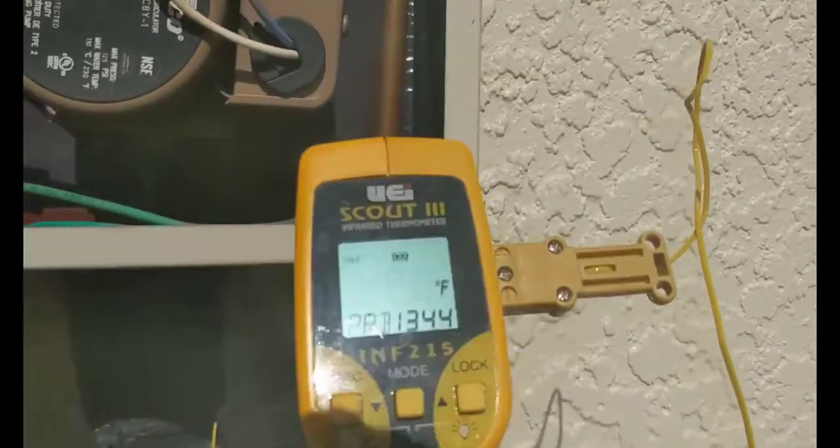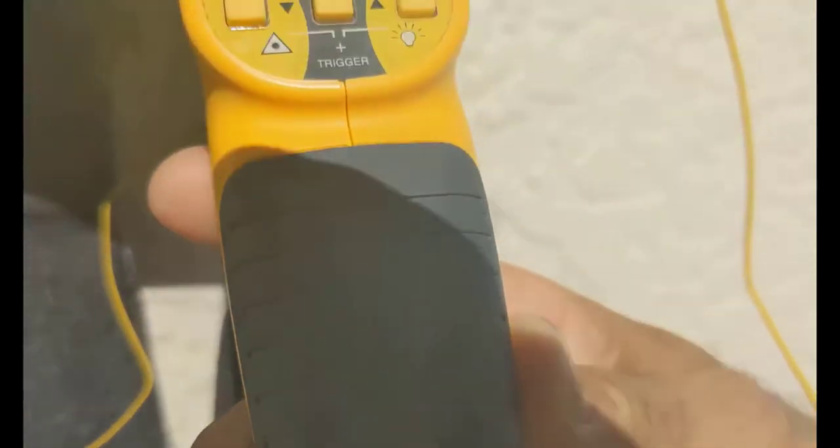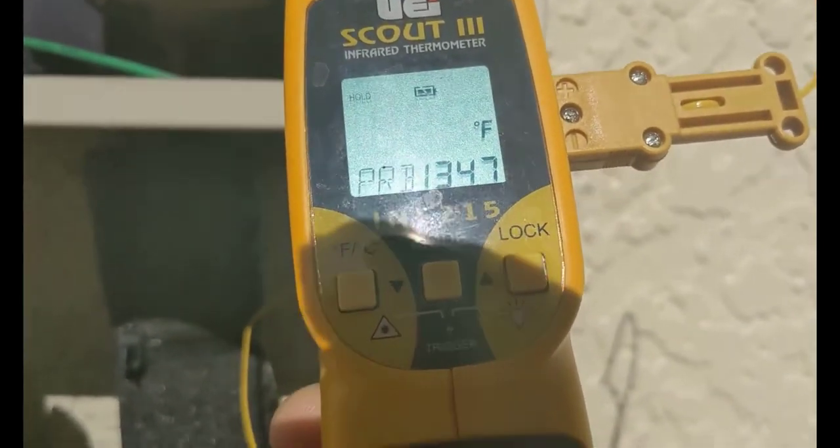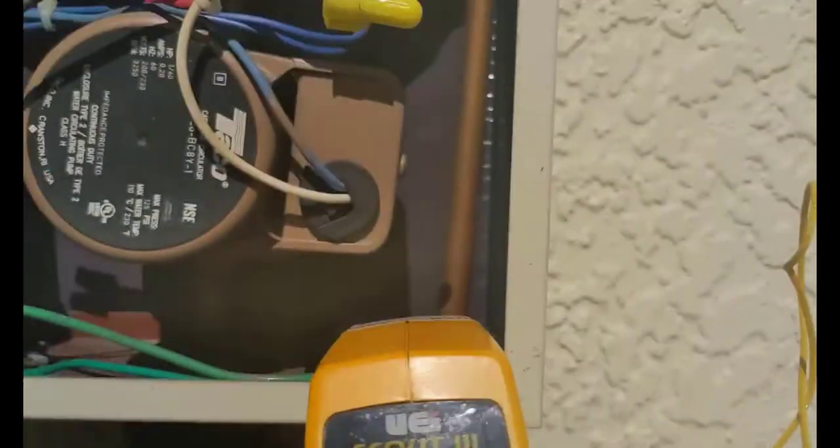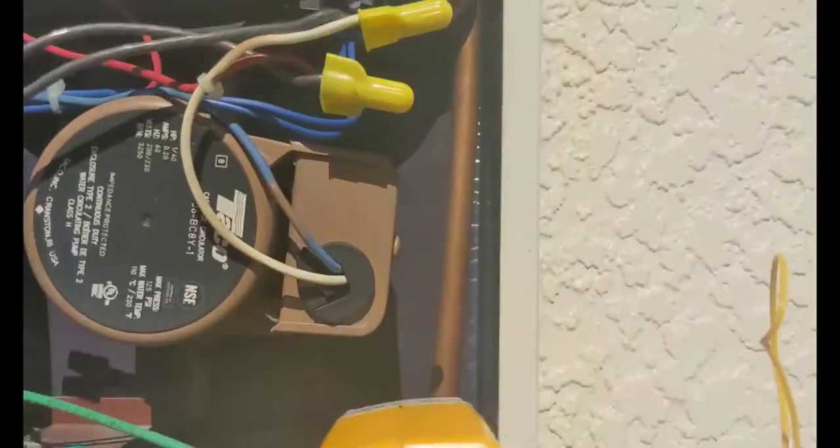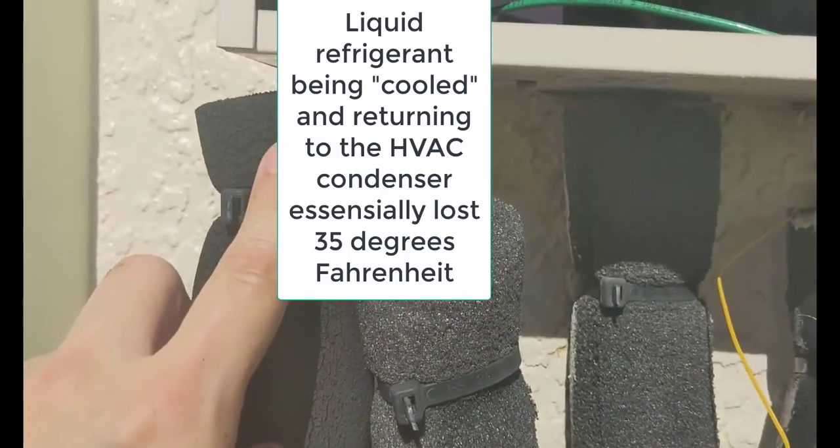So what we are measuring now, if you look behind there, okay right there, is the gas coming back to the air conditioning unit after it's already gone through the heat exchanger. So it goes through the heat exchanger and as you can see even though it's hot in the 130s it's a lot cooler than the way the gas left the system.